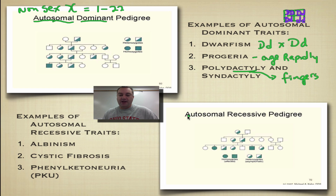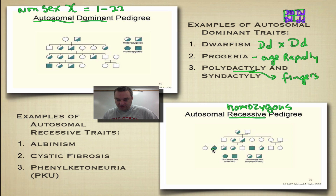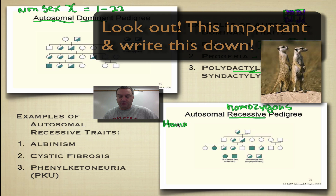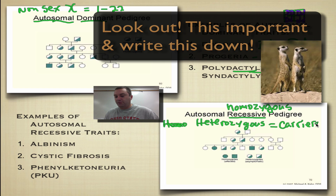Now let's look at autosomal recessive traits. You're still dealing with non-sex chromosomes, but because it's recessive, you have to be homozygous to show the trait — you need two recessive alleles. Looking through the pedigree, you only see a couple of individuals who have it, but many heterozygous individuals. With an autosomal recessive trait, the heterozygous individuals are called carriers. They don't display the trait themselves, but they can pass it on to the next generation.